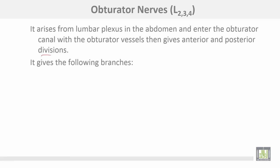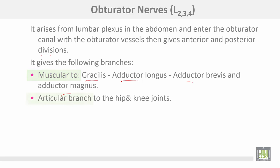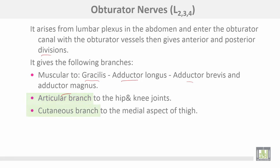The obturator nerve gives the following branches: muscular branches to gracilis, adductor longus, adductor brevis, and adductor magnus. Articular branches go to the hip and knee joints, and a cutaneous branch supplies the medial aspect of the thigh.